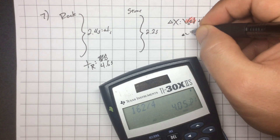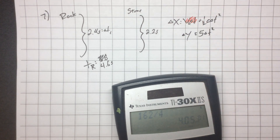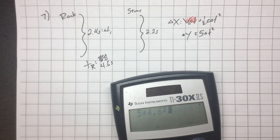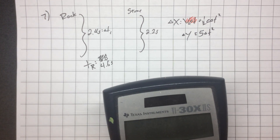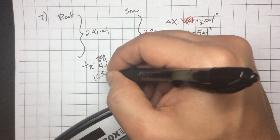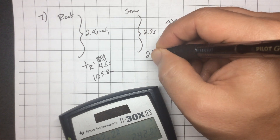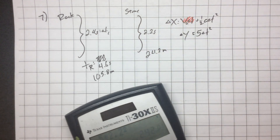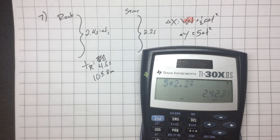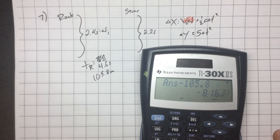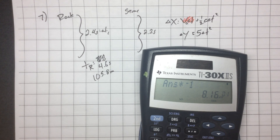To find how far apart they are, subtract one from the other: 105.8 minus 24.2 equals about 81.6 meters. That is the answer. Enter a positive number because it's asking how far apart they are, not their exact positions.